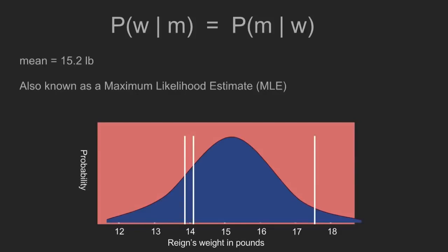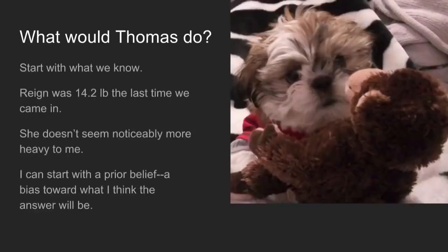It just so happens that the standard error on this is exactly what we calculated before — a very cool connection. When you take the average and calculate standard deviation and standard error, it gives you the likelihood that you would get by doing Bayes' method and assuming a uniform prior — not assuming anything about what the result's going to be. But we've already established that that's a really broad result and not helpful. So we need to start over and start with what we know.